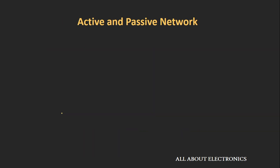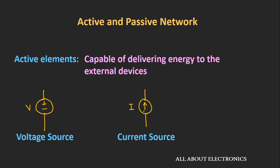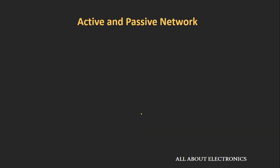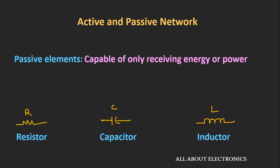The first classification is the active and the passive network. The active elements are elements which are capable of delivering energy to external devices. Examples of active elements are the voltage and the current source. The passive elements are capable of receiving energy or power, and examples of passive elements are the resistor, capacitor, and inductor.